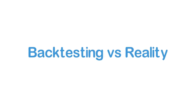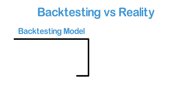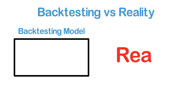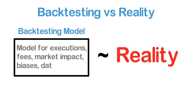Before deploying a trading algorithm to trade with real money, you will want to backtest and analyze its performance thoroughly. However, it is important to understand that backtest results are not equivalent to live results under real-world conditions. When developing and backtesting a strategy, you are basically trying to build the best possible model of reality. No matter how good this model is, it will still just be a model. Such differences can result from unrealistic filling conditions, fees, market impact, biases like overfitting or look-ahead bias, differences in data, brokerage-specific differences and more.